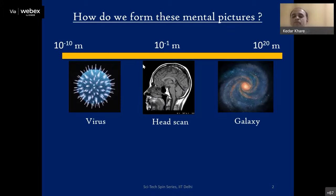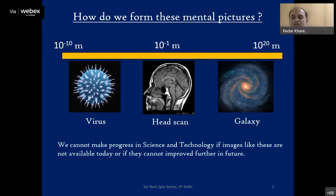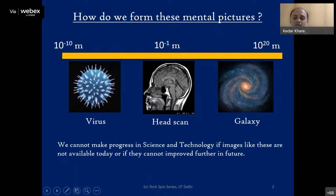In the middle picture is a head scan, closer to human length scales. What I want you to think about is: how do we actually form these mental pictures? All these pictures are important for science and technology to grow. If these pictures are not available to us, our science and technology wouldn't have come to this level. And if we cannot improve on them, our science will also stagnate.